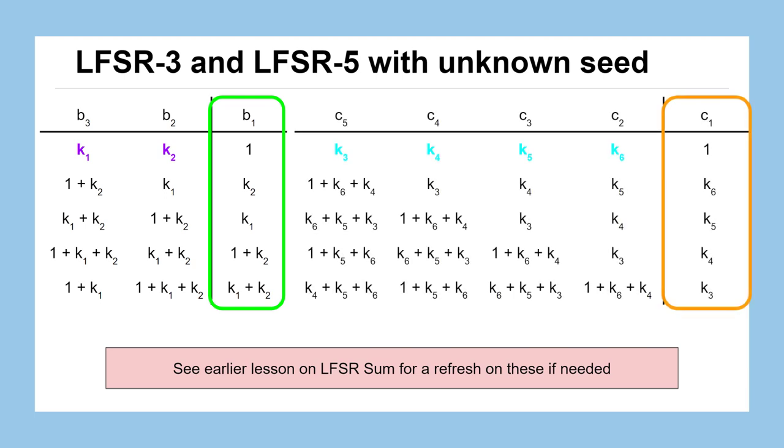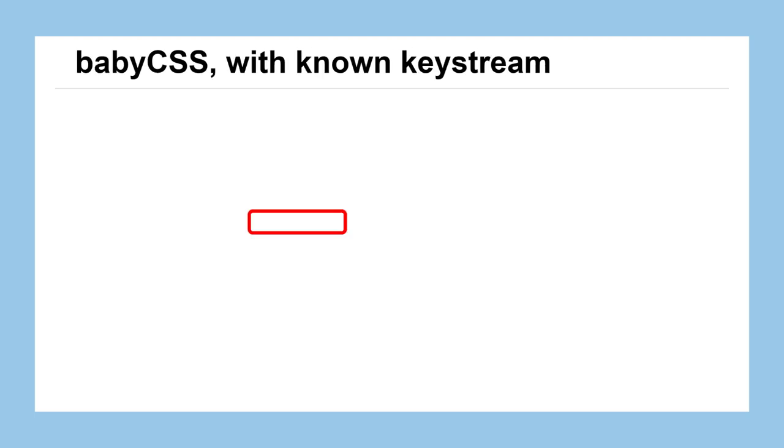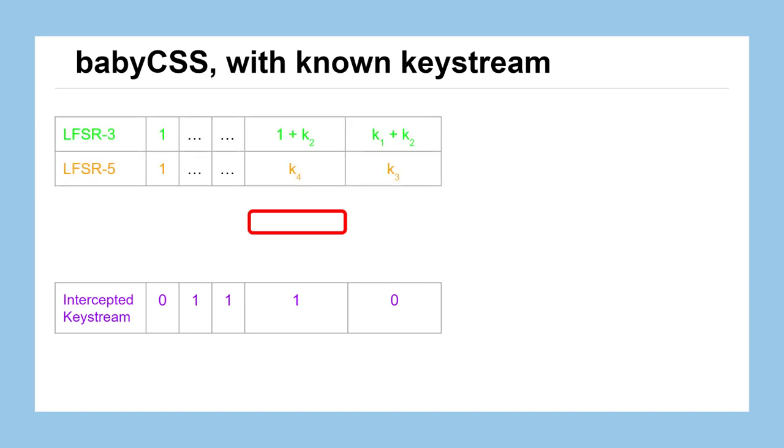And we would do the same thing with our five-bit LFSR. If you need a refresher on how we did that, I would consult our previous lesson on the LFSR sum cipher to make sure you understand where these output streams for the three-bit and five-bit ciphers are coming from. Now we'll take those and suppose that we have an intercepted keystream of 01110. We could take our outputs from LFSR-3 and 5 and say we get this condition that would correspond to those bits in the keystream. We could add them together to generate what we think would be a theoretical output of these two LFSRs. The first bits in our grouping, K1 and K2 added together with K3, gives us an output of K1 plus K2 plus K3.